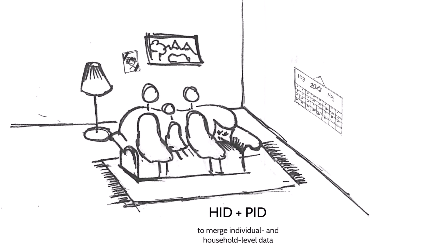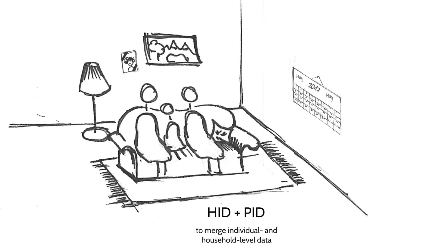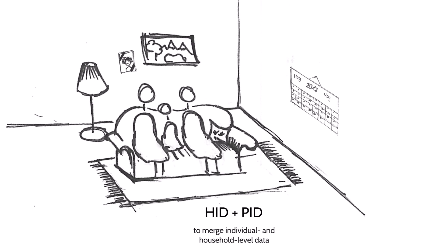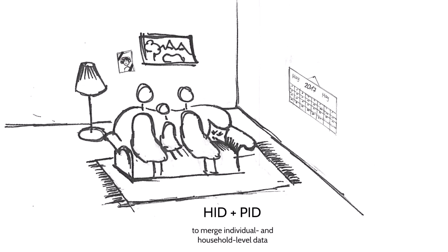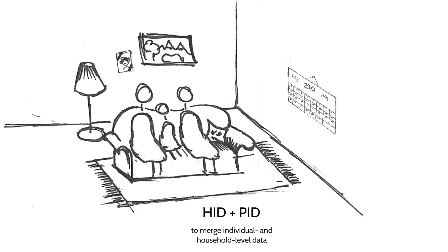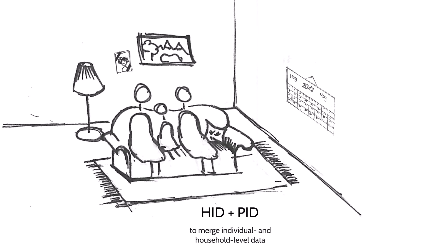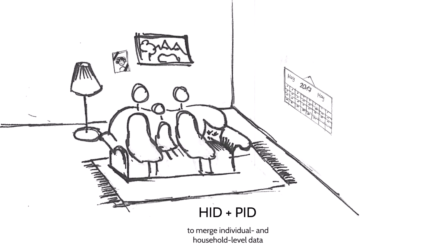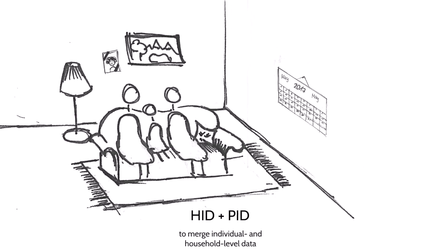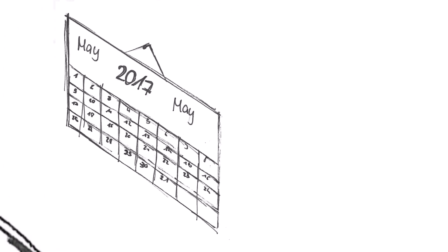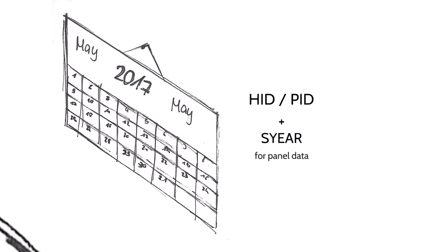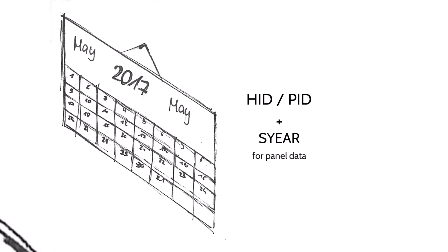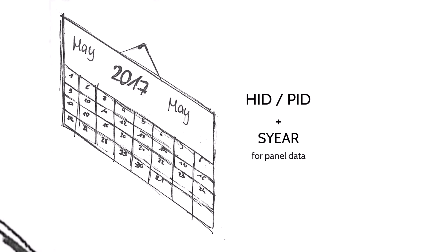All datasets on the individual level contain both PID and HID, so they identify individuals nested within households. This information can be used to merge household-level data, such as household income, with data on individuals within the household. Since the SERP has a panel structure, the survey year is also needed to identify observations of particular survey units in particular years.